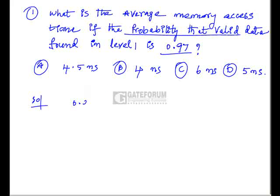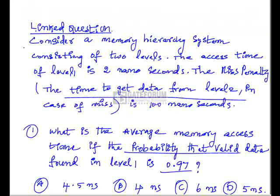So 0.97 times 2 nanoseconds only, because it is there in level 1. If there is a miss, that is 1 minus 0.97, that is 0.03. It is 2 nanoseconds. It has to see in level 1 as well as it has to go to level 2. For level 2 to get the data it takes around 100 nanoseconds.